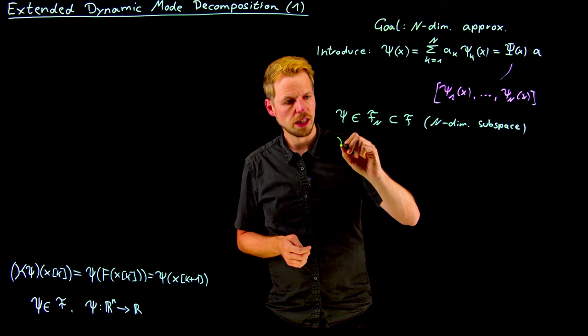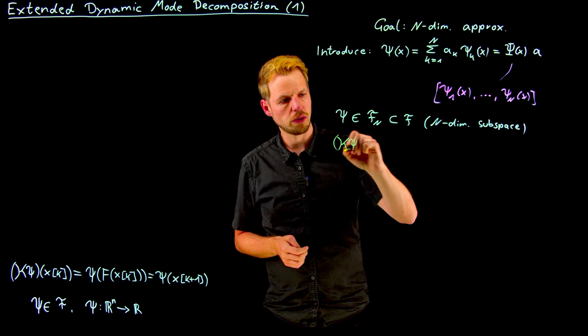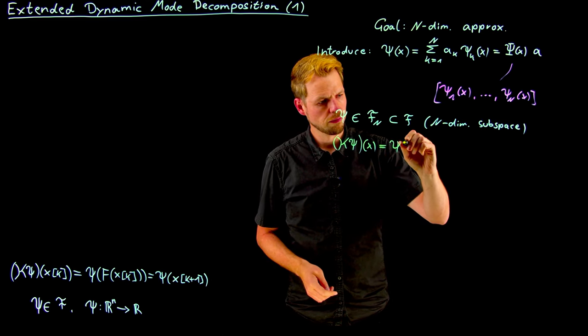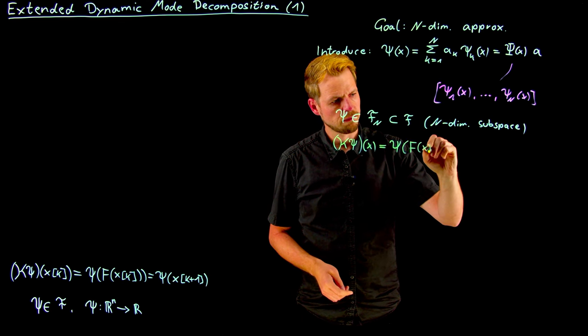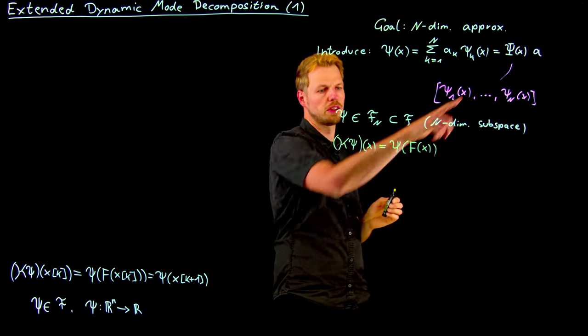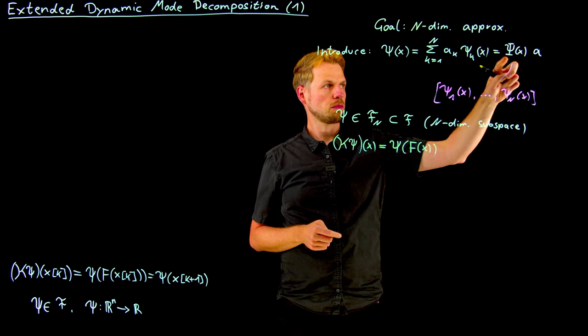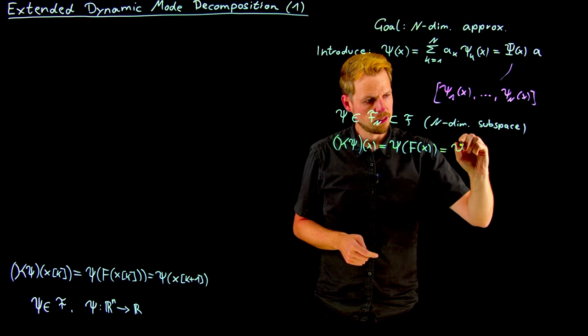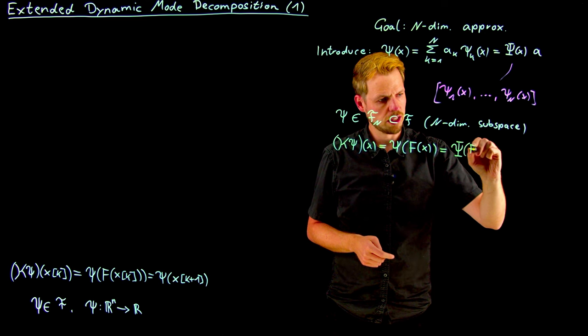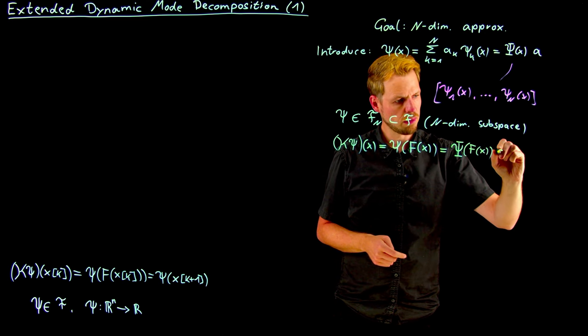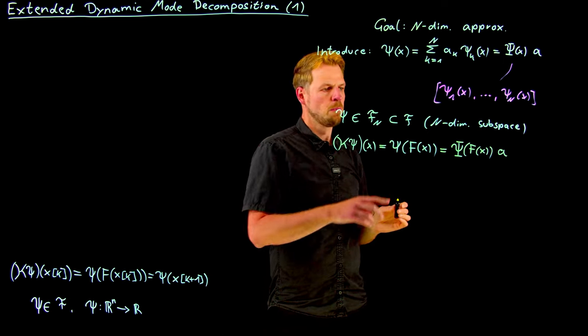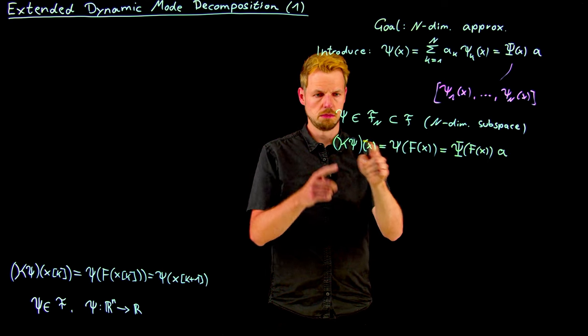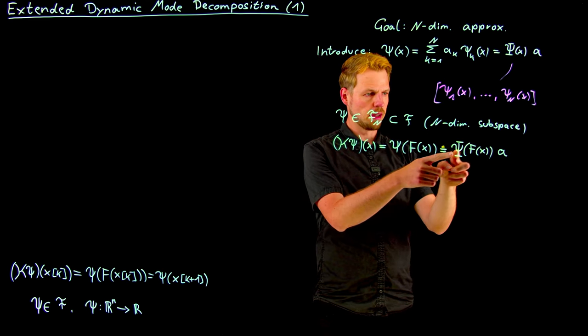But before we go there, let's simply use the definition of our Koopman operator. So K psi of x is psi of f of x. If you look at the definition now, this psi, if we express it in our basis, is simply plugging in the basis functions and then multiplying with this coefficient vector. What we get is this psi basis function vector, evaluated at f of x, multiplied with these basis coefficients.